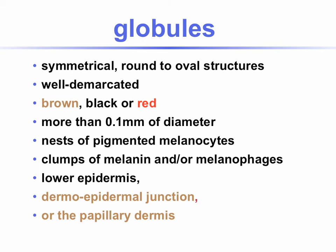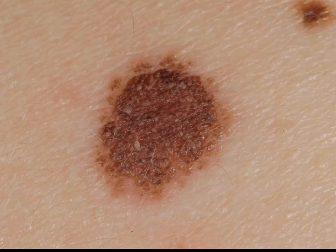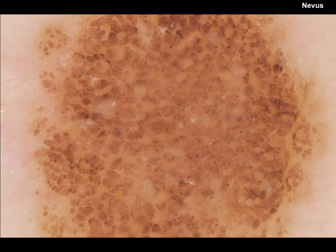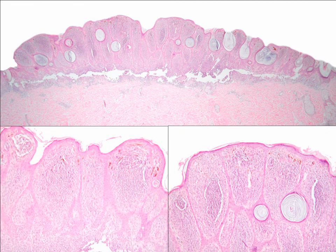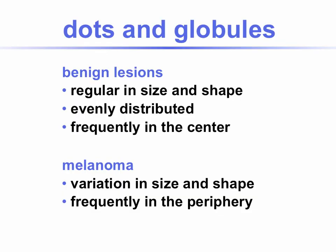Globules are symmetrical, round to oval structures that are well demarcated. They can be brown, black, or red in color. Usually they are more than 0.1 mm in diameter, so much bigger than dots. They correspond to nests of pigmented melanocytes, clumps of melanin, and/or melanophages in the lower epidermis or dermoepidermal junction — appearing brown — or in the papillary dermis, where they appear gray. This is the clinical and dermoscopic picture of a compound nevus showing multiple angulated cobblestone-like globules. The histopathology of the corresponding case shows nests of melanocytes that explain this globular appearance.